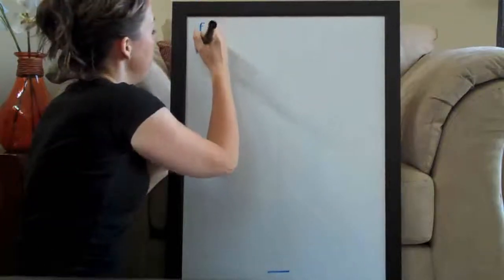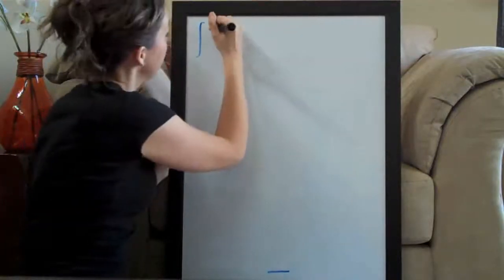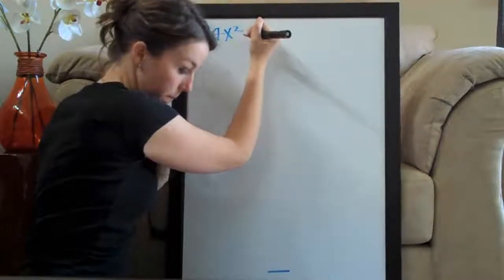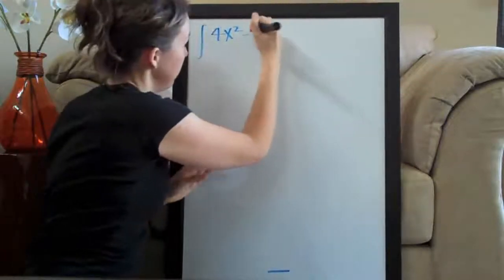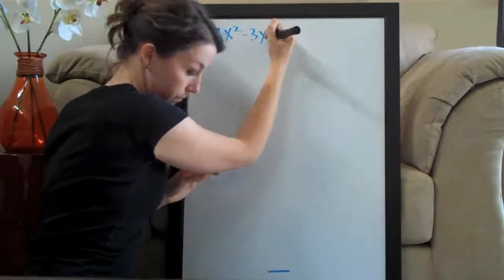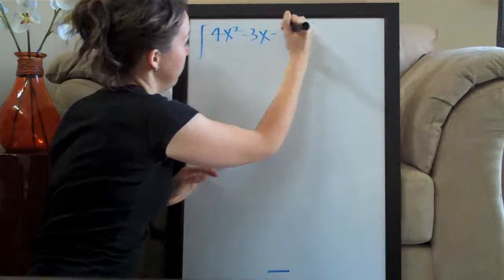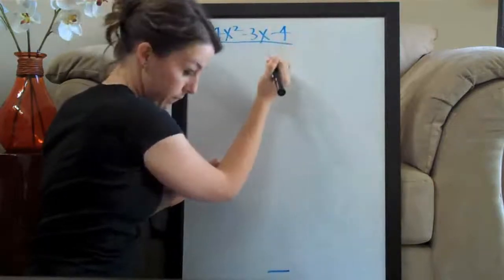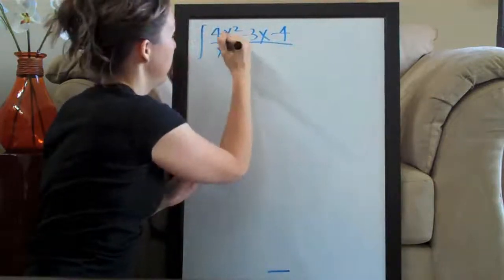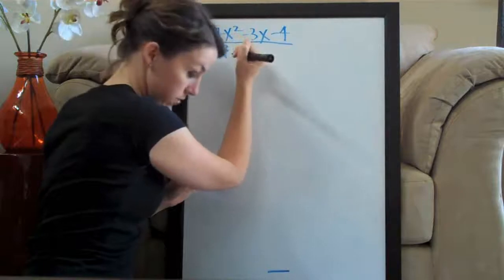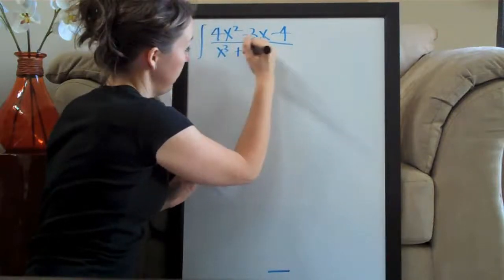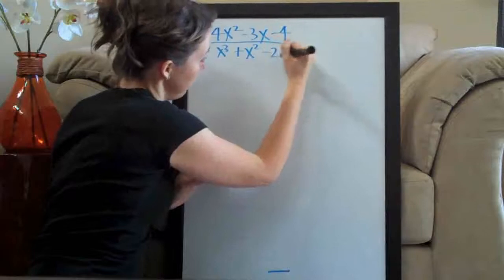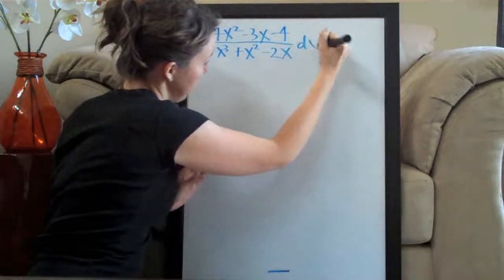The problem is the integral of 4x squared minus 3x minus 4 over x cubed plus x squared minus 2x, dx.